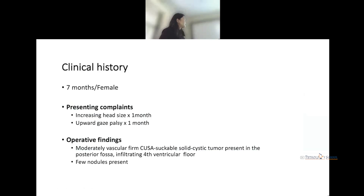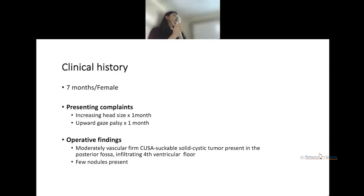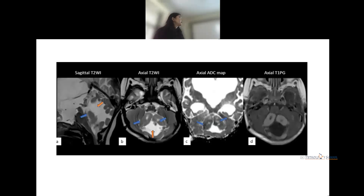A clinical case: a seven-month-old female presented with increasing head size for one month and upward gaze palsy. On operative findings there was a solid cystic tumor in the posterior fossa infiltrating into the floor of the fourth ventricle with a few nodules. On MRI, the T2-weighted image shows the nodularity of the tumor.